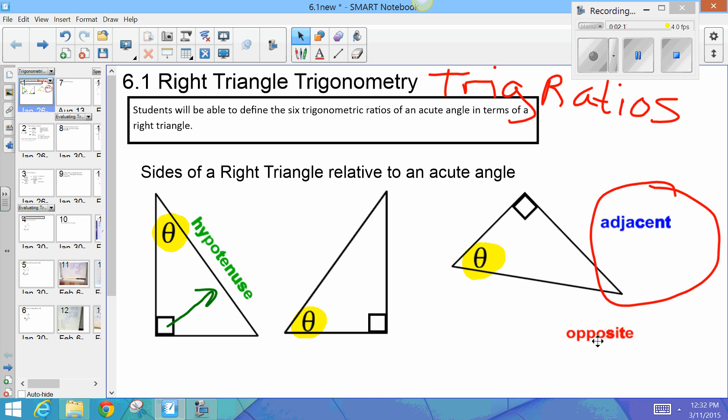Now, opposite and adjacent. You guys are probably already familiar with what a hypotenuse is. Opposite and adjacent are relative to the angle. Which angle is important for this particular problem.